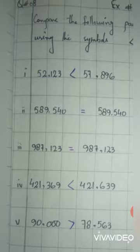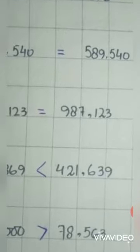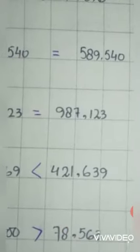The number 4: 421,639. The number 4: 421,369. The figure is big. The number 421,369 is less than 421,639.